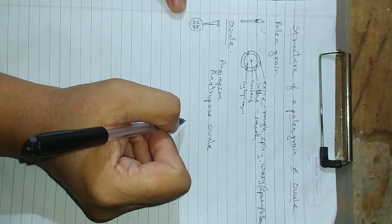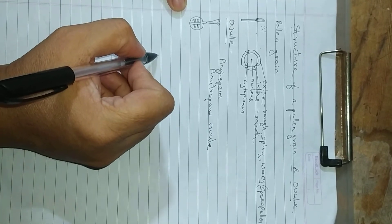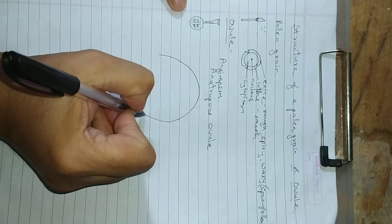Anatropous ovule, that is, it is inverted. You will find this is the structure of the anatropous ovule.